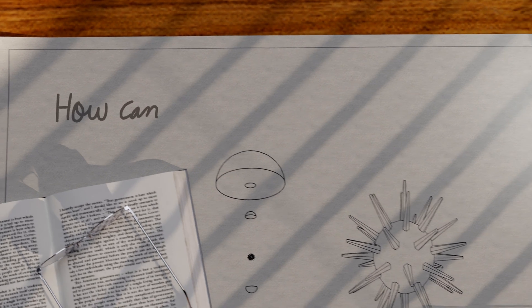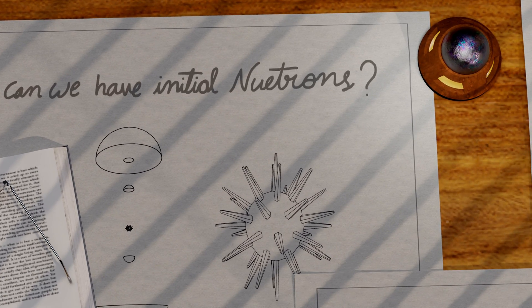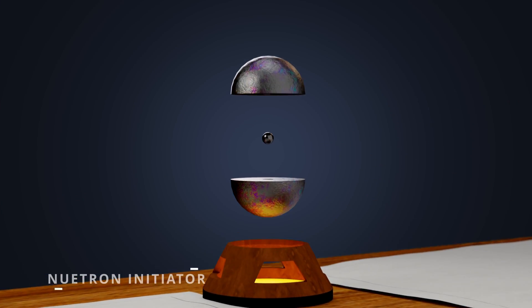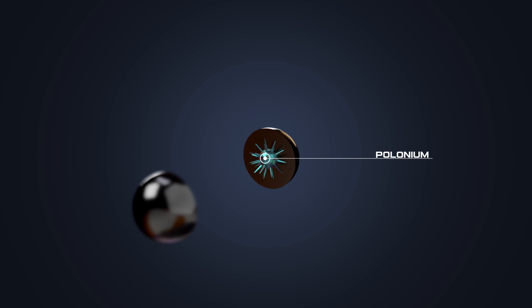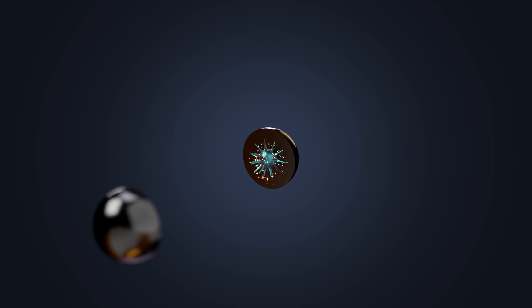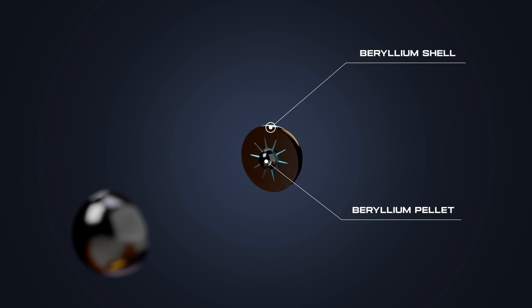So the question arises, how can we have the initial neutrons? Inside the plutonium sphere there is a neutron initiator, made of polonium and beryllium. The polonium is in shape of a sea urchin with spikes around it, and it emits alpha particles. There is a beryllium shell in a pellet, which absorbs these alpha particles and releases neutrons.